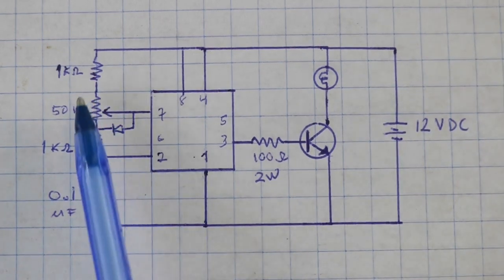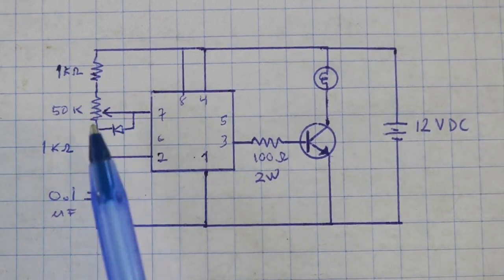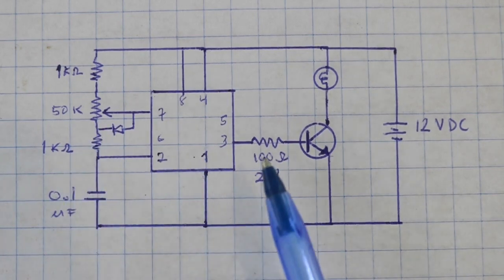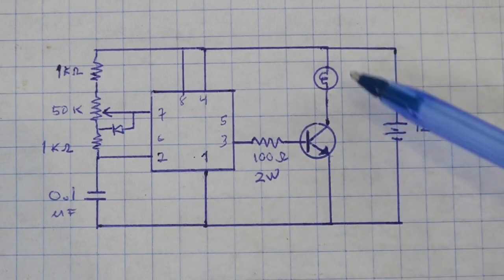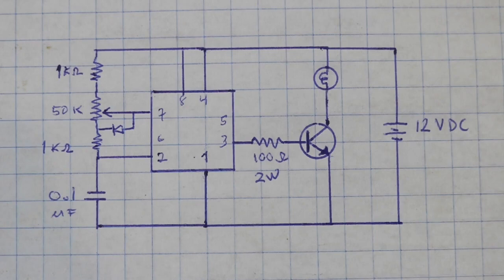Varying the potentiometer, we can change the duty cycle of the 555 timer and the transistor amplifies the current that is fed to our lamp or DC motor. So let's now see the circuit in action.